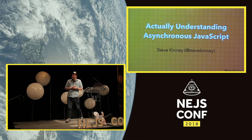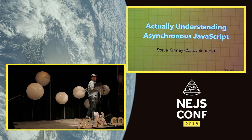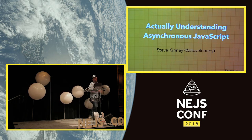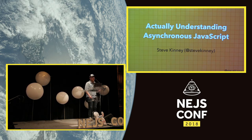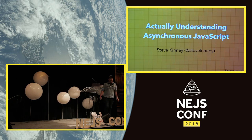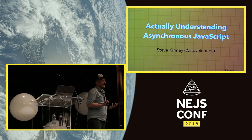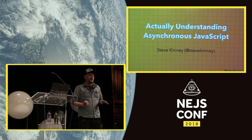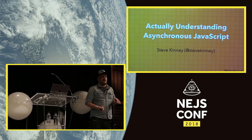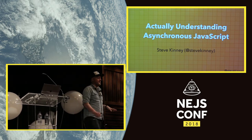I think there are several levels of understanding async JavaScript. Level one is 'I don't know' — I started as a Ruby developer and when I switched to JavaScript I literally didn't know why a variable was undefined. Level two is where a lot of us live: I don't really understand how it works, but if I use dot-bind and throw everything in a callback, everything's fine.